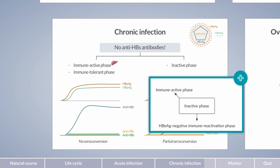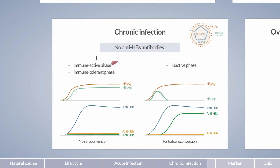This may occur spontaneously or be triggered by immunosuppressive therapy. On the other hand, recovery from infection can occur by the production of anti-HBs antibodies, which clear the infection. In summary, chronic forms of hepatitis B infection are characterized by the lack of anti-HBs antibodies. However, they can be differentiated according to the formation of anti-HBe antibodies, the amount of viral replication, and the presence or absence of liver inflammation. The natural course of chronic hepatitis B infection is quite variable and is determined by an interplay between the host immune response and virus replication.